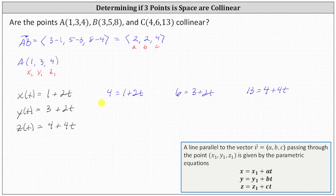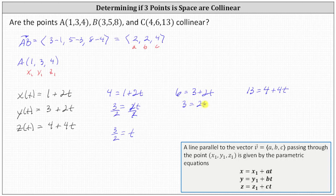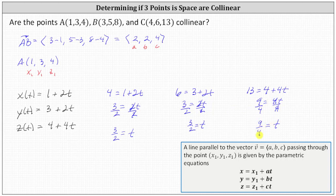For the first equation, we subtract 1 on both sides, giving us 3 = 2t, so t = 3/2. For the next equation, we subtract 3 on both sides, giving us 3 = 2t, so again t = 3/2. For the last equation, we subtract 4 on both sides, giving us 9 = 4t. Dividing both sides by 4, we get t = 9/4, not 3/2. Because we don't have the same value of t for each of the three equations, point C is not on the line, and the three points are not collinear.